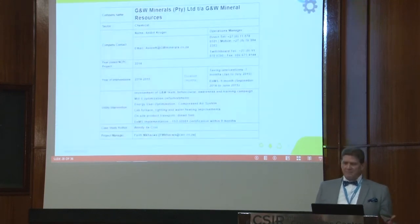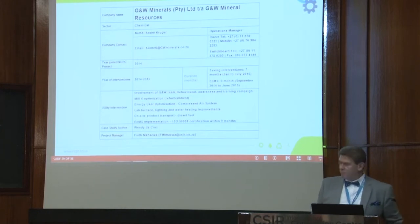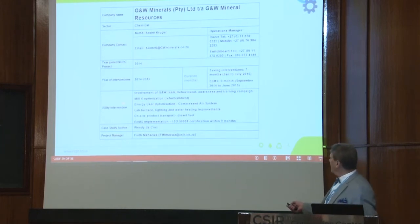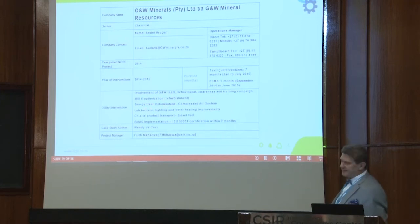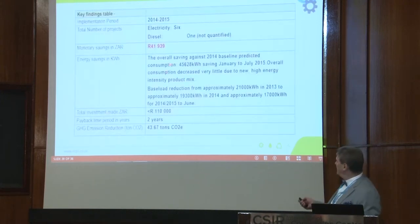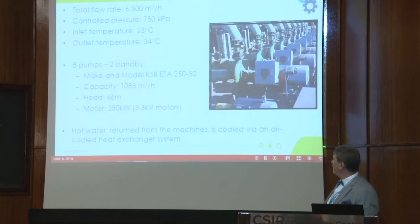I'll run through the South Africa case studies quickly. At GNW-based Minerals, the projects included mill optimisation, a lab furnace optimisation, and a compressed air system. The savings were relatively small but real — 41% with a two-year payback. Nobody's going to give you that for nothing.